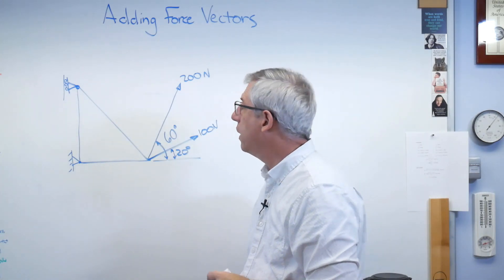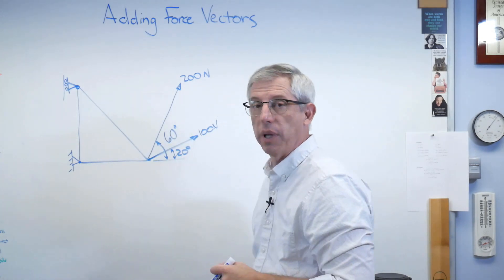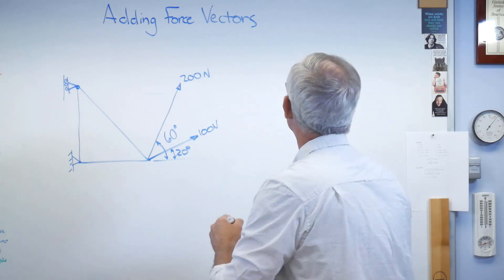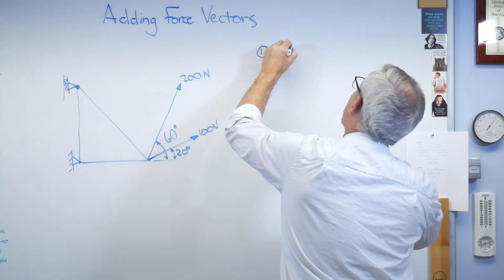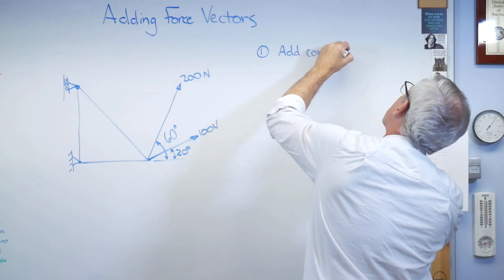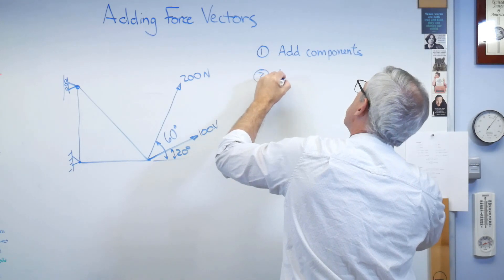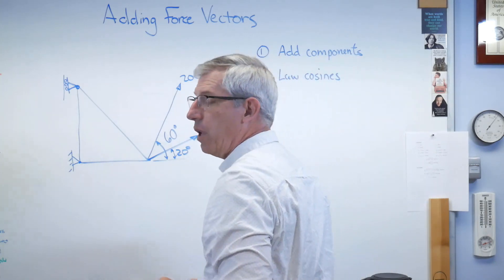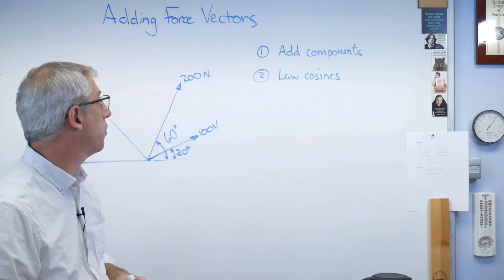Now in order to figure out what's going on, we've got to resolve these two forces into a single one. Well, there's a couple of ways to do this. Possibility number one is to just add the components, and number two is to start doing some trig. Basically, it's called the law of cosines is what we'll use here. See how that works. They both give you the same answer. They both work just fine.